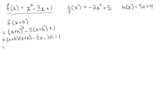X times X is X squared. The outer term, X times H, will be plus XH — and remember that means plus 1XH. The inner term will be H times X. You can write that as H times X or X times H; I'm going to write it as XH so it's clear these are like terms. And then the last term will be H times H, which is H squared. Then we finish writing the negative 3X, the minus 3H, and the plus 1.